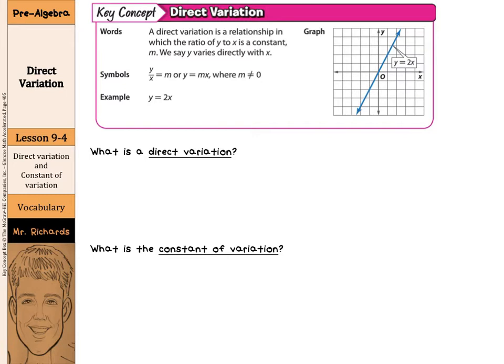Now let's start off with a couple vocabulary words here such as, what is a direct variation? Well, a direct variation is a special type of linear relationship that describes rate of change.